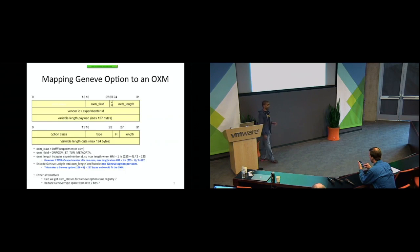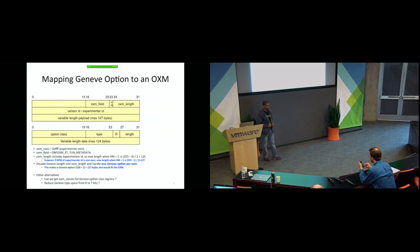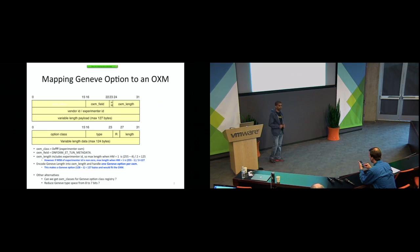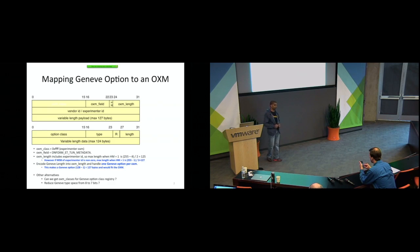Let's start with the first slide. Here I'm actually showing you how to map a Geneve option into an OpenFlow OXM. The Geneve header is 128 bytes. As you can see, the OpenFlow OXM header, when you support masking, can only support up to 127 bytes. So we want to basically fit the 128-byte Geneve option into an OpenFlow OXM.